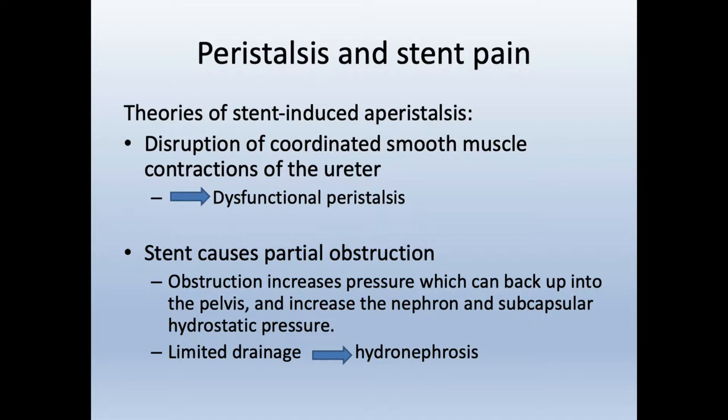In terms of peristalsis and stent pain, the final theory is that stents cause dysfunction in peristalsis and that somehow plays a role in the associated pain. The theories are that stent placement causes a disruption of coordinated smooth muscle contractions, leading to dysfunctional peristalsis and pain, or that stents cause partial obstruction. Stents are supposed to cause drainage, but what we see is that when stents are placed — especially chronic stents — there is actually an increase in hydronephrosis. The theory is that obstruction causes increased pressure backing up into the pelvis and increasing nephron and subcapsular hydrostatic pressure, and that limited drainage is associated with the flank pain patients present with.